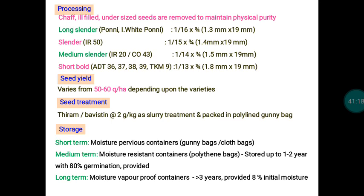After cleaning and grading, seeds must be given protection treatment before storage, as there is a chance of pest and disease occurrence during storage. To protect seeds against storage pathogens and insect populations, seeds must be treated with pesticide and fungicide. Carbendazim or Thiram are fungicides used for this purpose — previously Thiram was recommended, but recently Thiram and Captan have been banned by the Government of India.